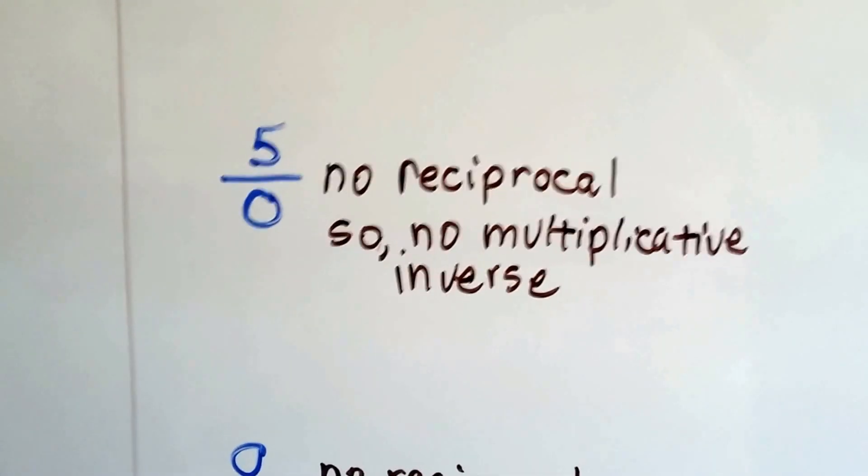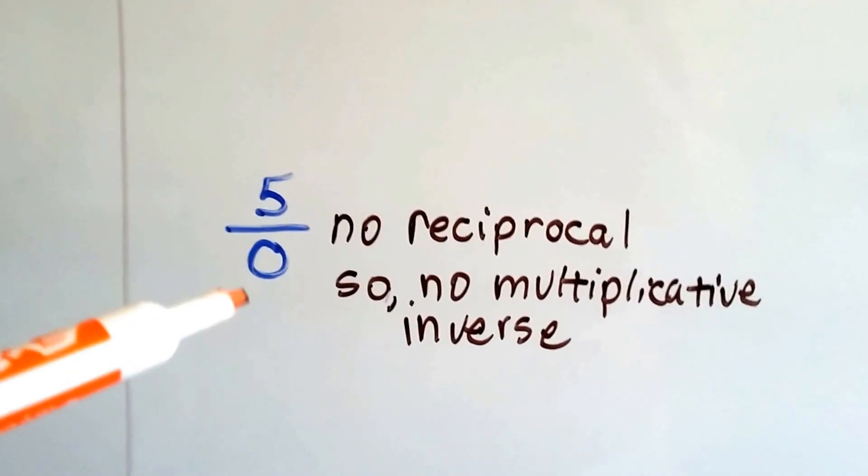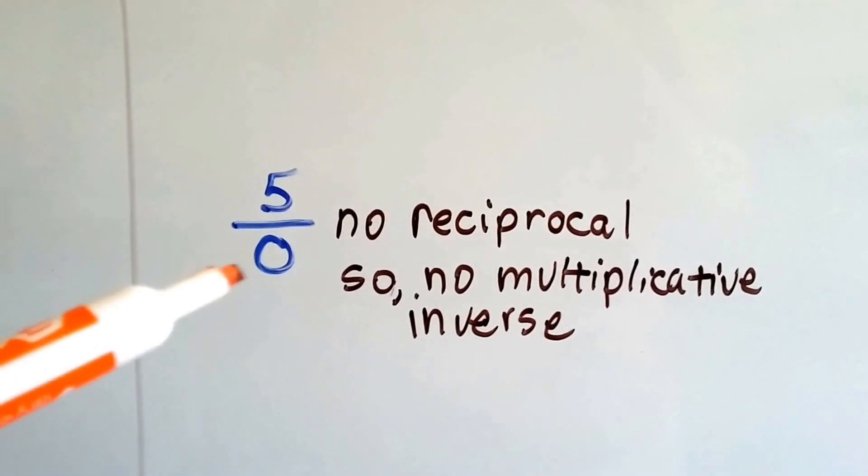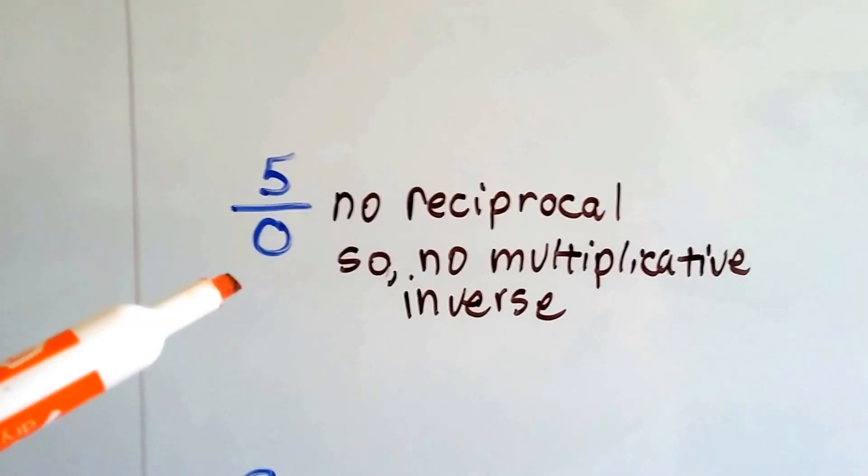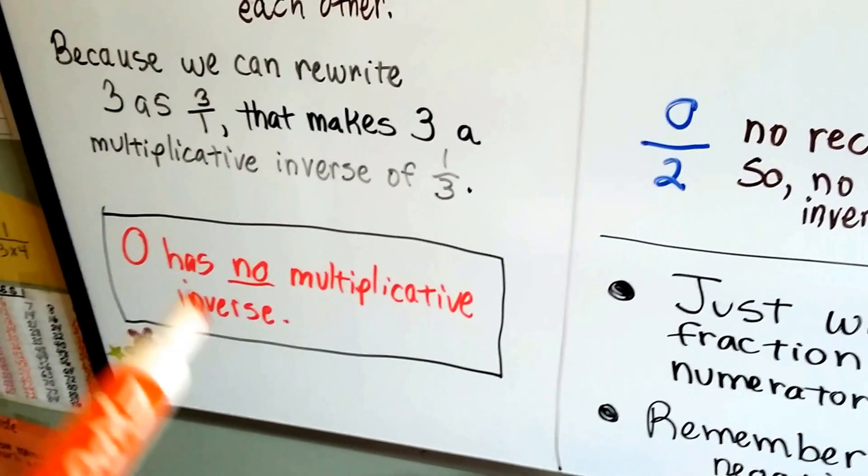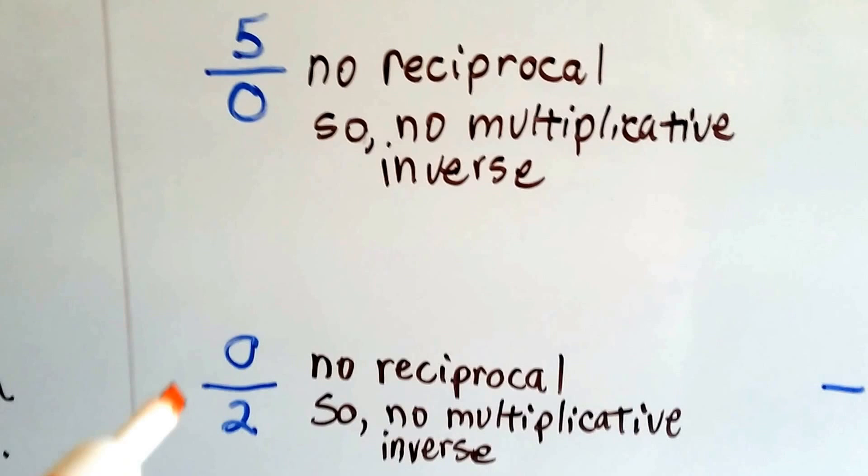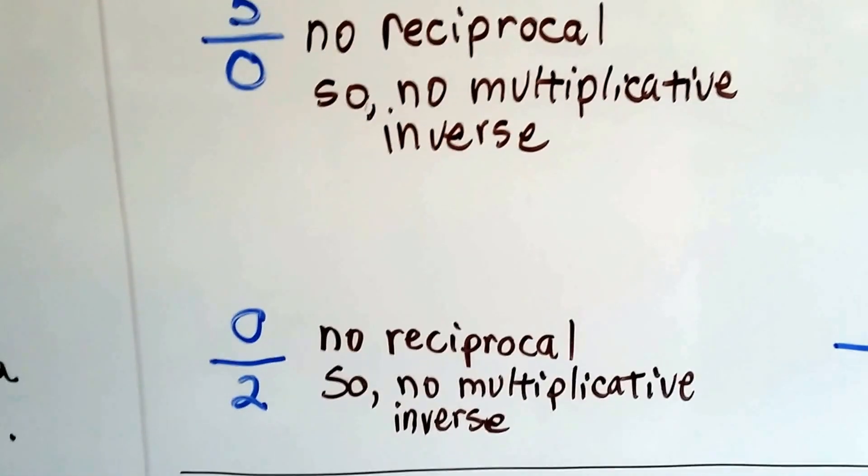Now, what if we had 5 over 0? Well, we can't divide 5 by 0. Can't divide by 0. There's no reciprocal, so there's no multiplicative inverse. Remember, 0 has no multiplicative inverse. Same with if the numerator was 0. Nope, can't be done.